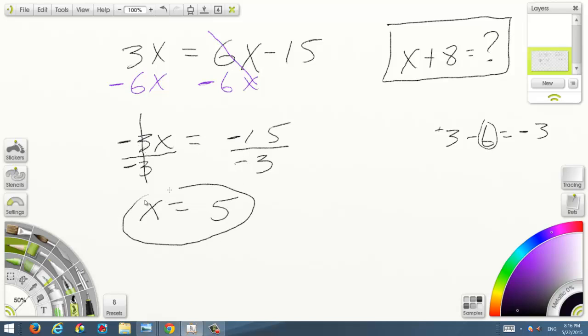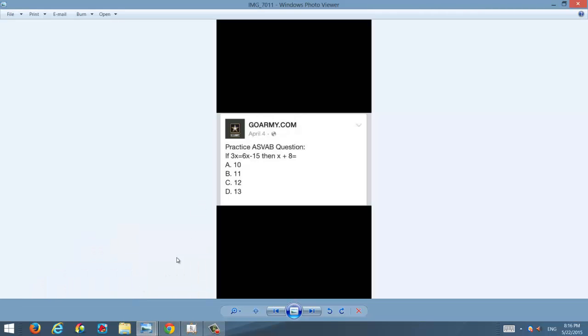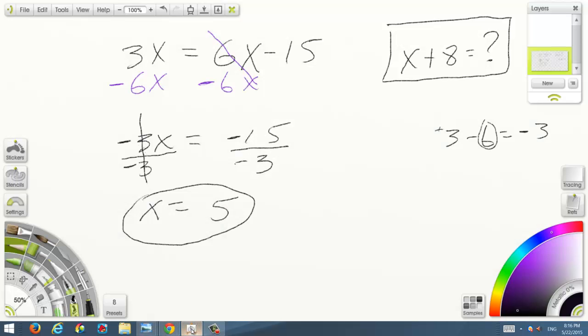So you got x equals 5, but that's not the answer. Let's see if that's there. Just that would be like a trick one. They didn't put it. Usually they would put it.